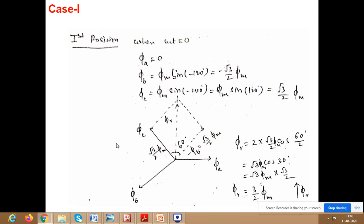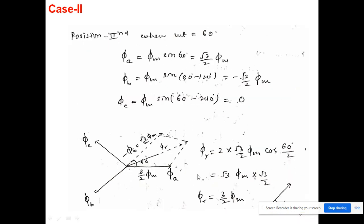In Case 2, ωt = 60°. Here phi_a = √3/2 * phi_max, phi_b = 0 (since sin(60°−120°) = sin(−60°) gives that component), and phi_c is in the negative direction. Drawing phi_a in the positive direction and phi_c in the negative direction, and applying the parallelogram law, the resultant magnitude is again 3/2 * phi_max, but the direction of the resultant has rotated compared to Case 1.